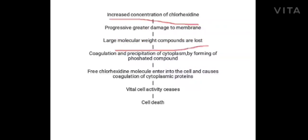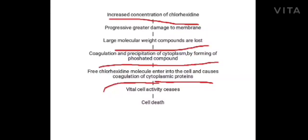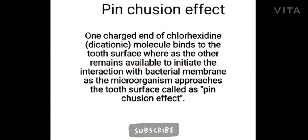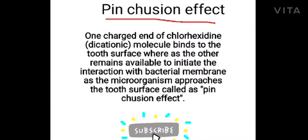At high concentration, increased concentration of chlorhexidine causes progressively greater damage to the membrane. Large molecular weight compounds are lost, coagulation and precipitation of cytoplasm occurs by forming phosphate compounds. Free chlorhexidine molecules enter the cell and cause coagulation of cytoplasmic cell protein, vital cell activity ceases, cell death occurs, and it acts as a bactericidal property.